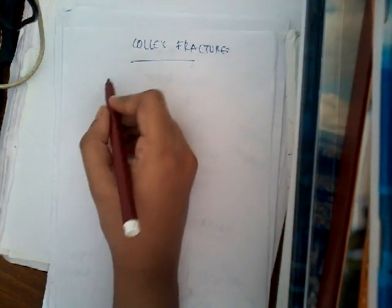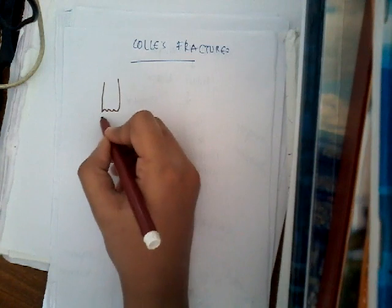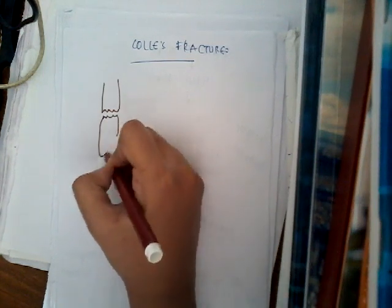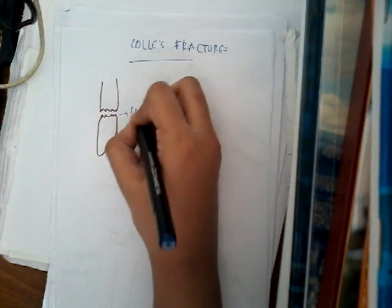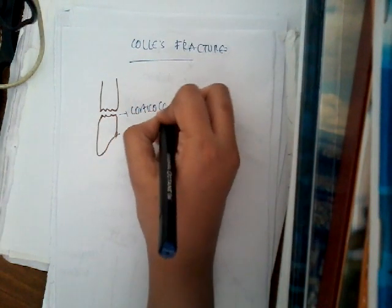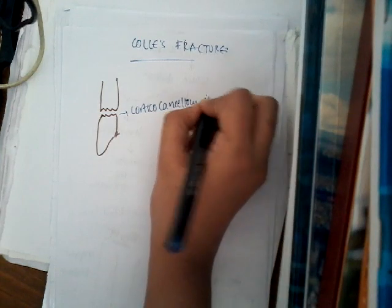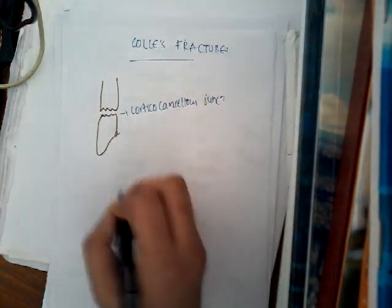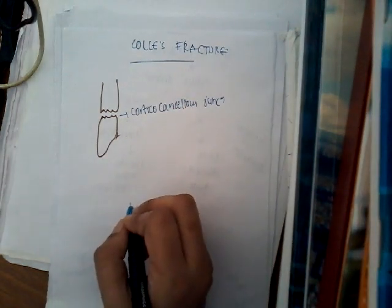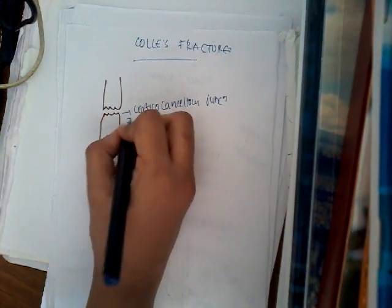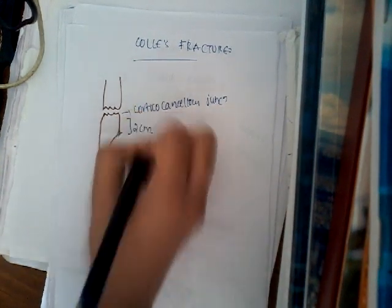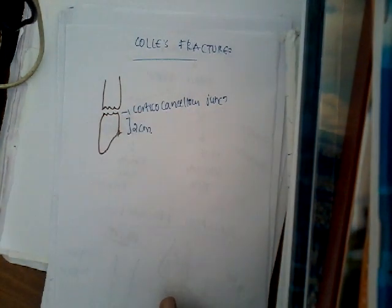Colles fracture is a fracture at the distal end of radius, at the corticocancellous junction. This corticocancellous junction is about 2 cm from the distal articular surface. Whenever there is a fracture at this corticocancellous junction, it is called Colles fracture.